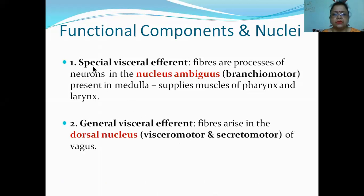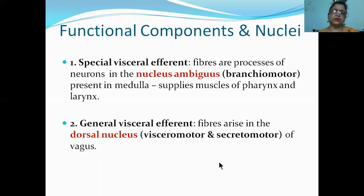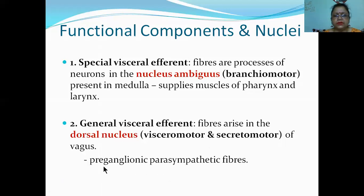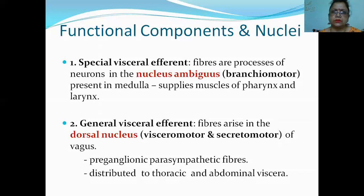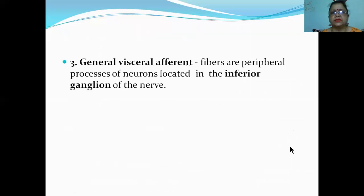Next is the general visceral efferent. These are visceral motor and secretomotor fibers located in the dorsal nucleus of vagus. They will supply the viscera and the glands. The dorsal nucleus of vagus gives preganglionic parasympathetic fibers distributed to thoracic and abdominal viscera - lungs, heart, esophagus, and abdominal organs including liver, gallbladder, stomach, small intestine, and two-thirds of the large intestine.